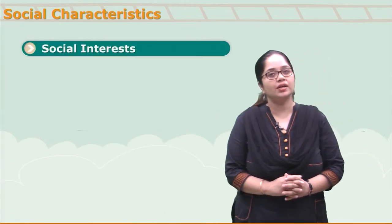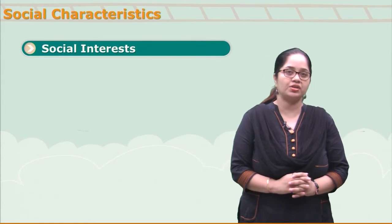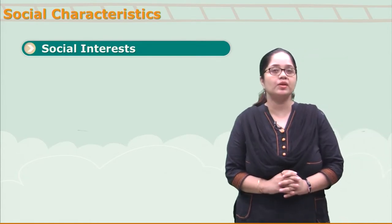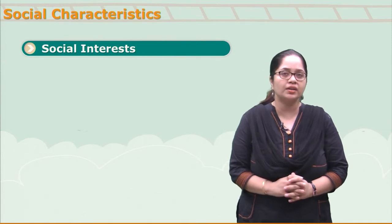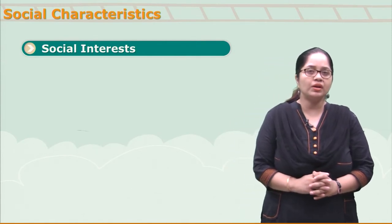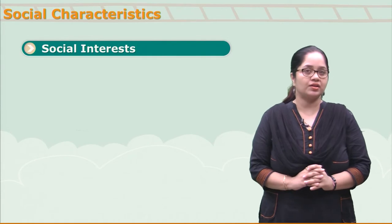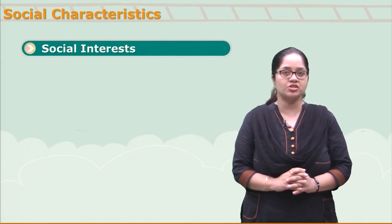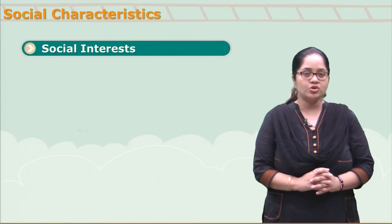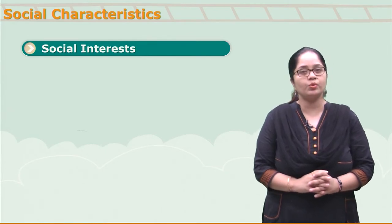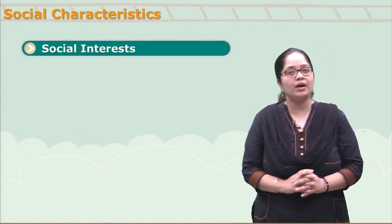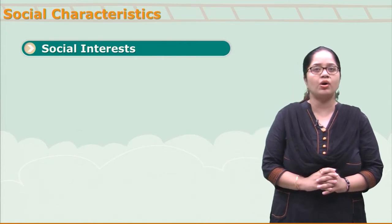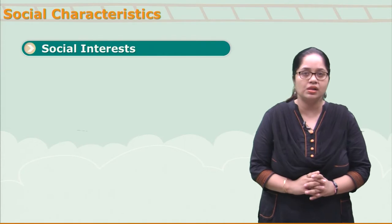At this stage, teenagers develop varied social interests. They like to party, be in the company of friends, enjoy, and go out — but only where their friends are. They do not like to be part of social functions where only their family is involved. They want to socialize around friends, and they may even start experimenting with alcohol and smoking.